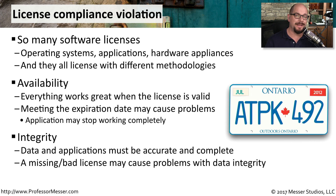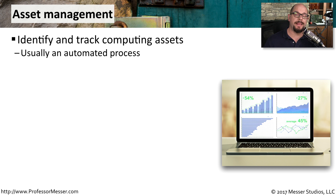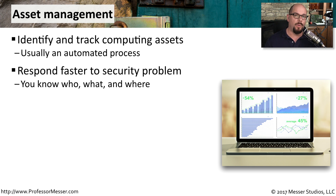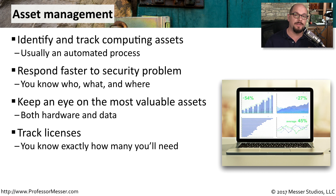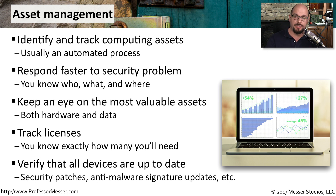That's why it's so important to make sure that all of our licenses stay in compliance. We also need some way to track the assets used in our organization — this is usually an automated process constantly updated in a master database. This allows us to respond faster if there's a security issue, knowing exactly what software is installed on a laptop and what operating system is running on that particular device. It's also a way to keep track of where your most valuable assets might be — your mobile devices, laptops, and all desktop devices. You can track licenses and make sure all the latest security patches have been installed and all antivirus signature updates are in place, keeping all of your systems as secure as possible.